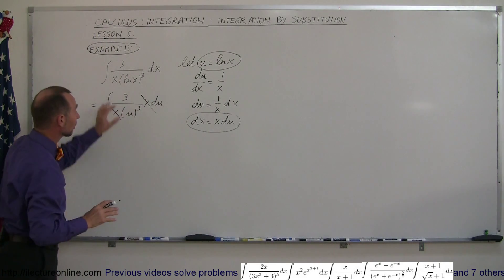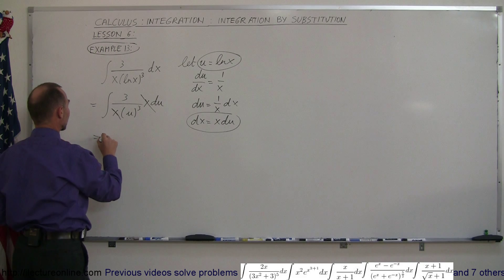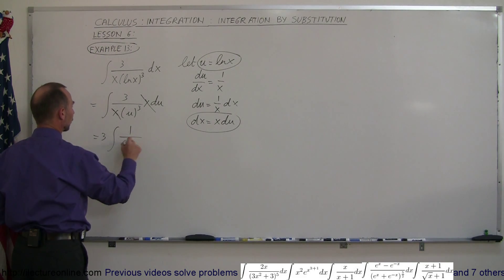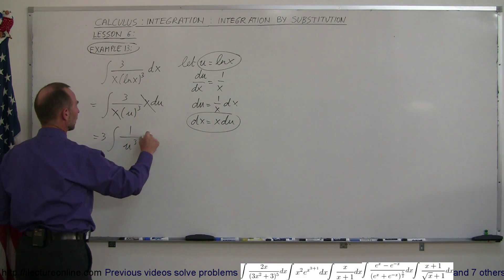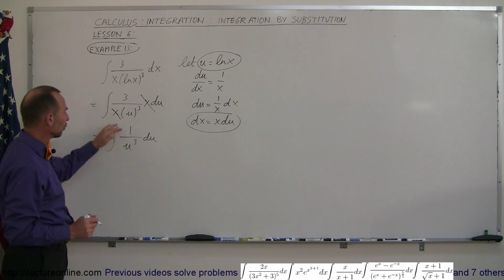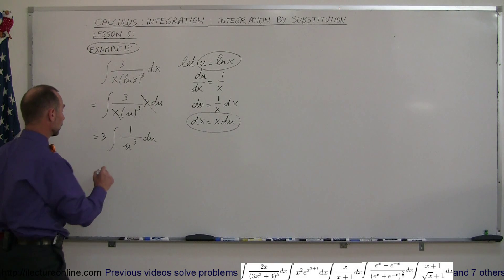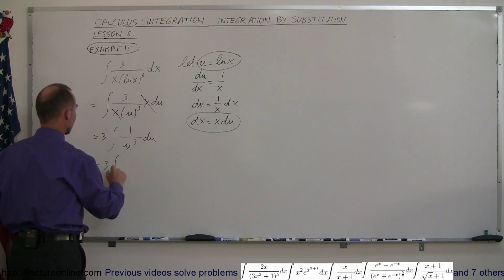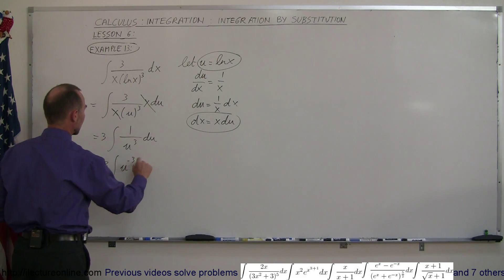And of course I'm going to take the three outside integral signs, so this is three times the integral of 1 over u to the third du. Now, I'm going to take the u to the third and move it to the numerator and write it as u to the negative third. So this is equal to 3 times the integral of u to the negative 3 du.